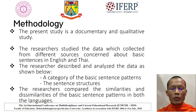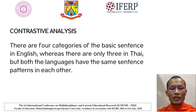Methodology. The present study is a documentary and qualitative study. The researchers studied the data collected from different sources concerned with basic sentences in English and Thai. The researcher described, analyzed, and compared the similarities and dissimilarities of the basic sentence patterns in both languages. After reviewing the data, the researchers found out there are four categories of basic sentence in English, whereas there are only three in Thai.